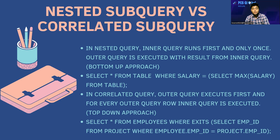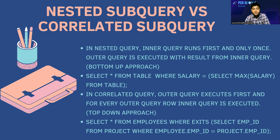In a correlated subquery, the outer query executes first, and for every outer query row the inner query is executed — this is a top-down approach. The syntax looks like: SELECT * FROM employees e WHERE emp_id IN (SELECT emp_id FROM project WHERE employee.emp_id = project.emp_id).